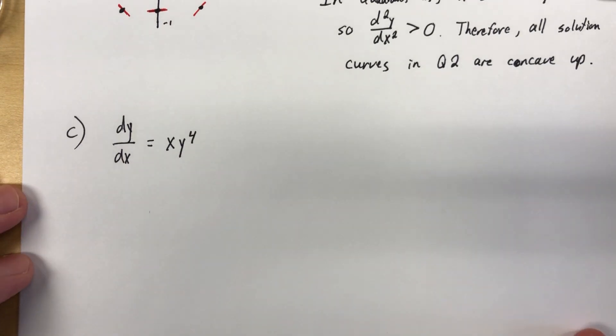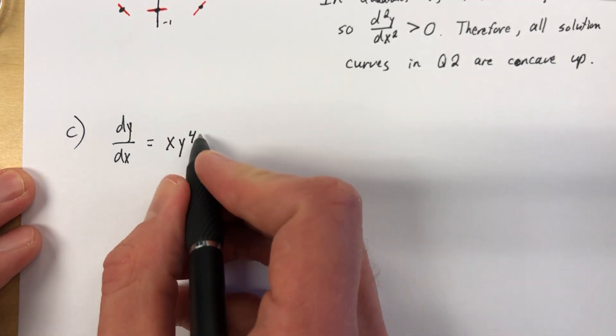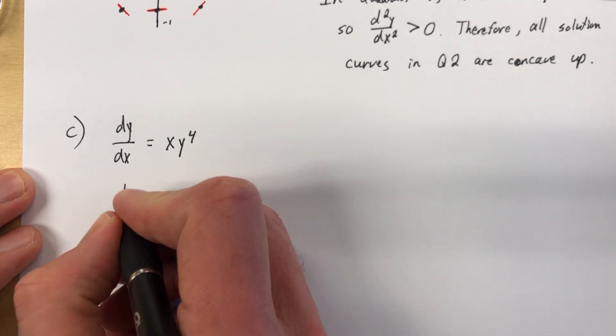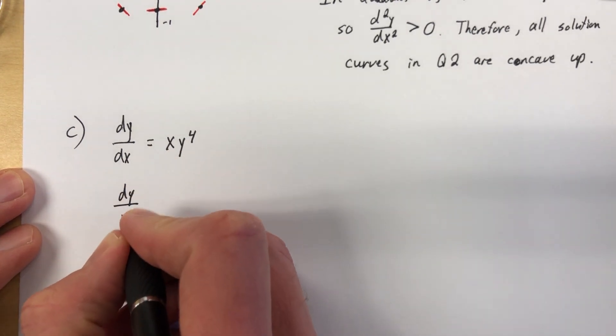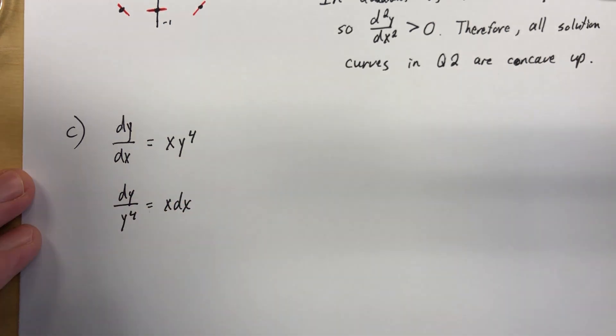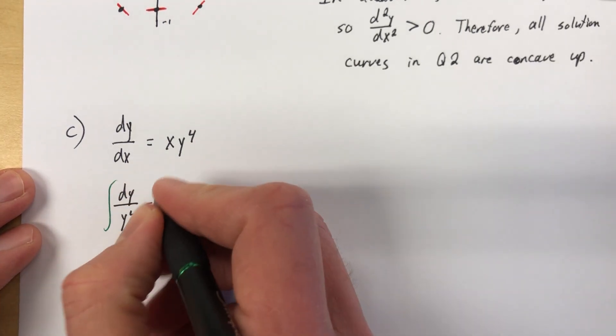I'm going to start here. dy/dx equals xy to the 4th. Let's separate our variables. We will bring our dx up, we'll bring our y to the 4th down. dy over y to the 4th equals x dx. We are ready to integrate.